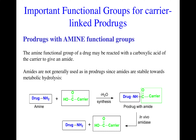We also discussed some utilities of prodrugs. We know we can use prodrugs to increase the stability of a molecule, maybe increase the activity, and also in some cases improve patient acceptability. There are numerous different advantages of using the prodrug approach in structural modification to optimize lead compounds to get to a drug candidate. In the previous lecture, we also looked at important functional groups for carrier-linked prodrugs specifically.